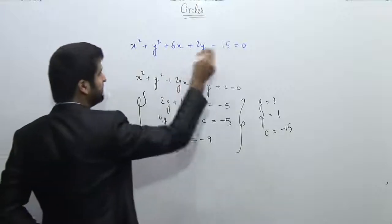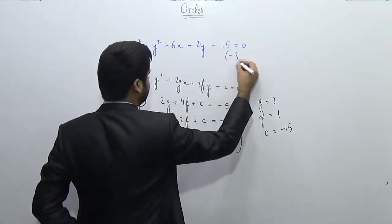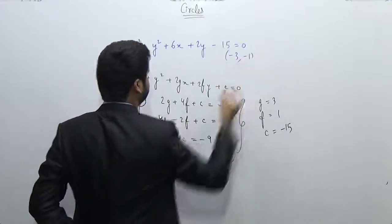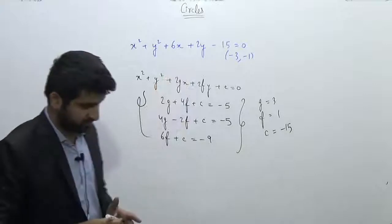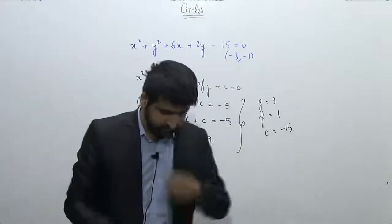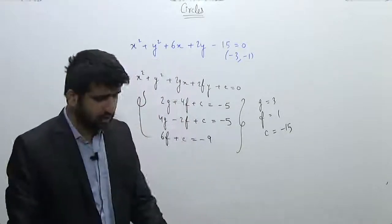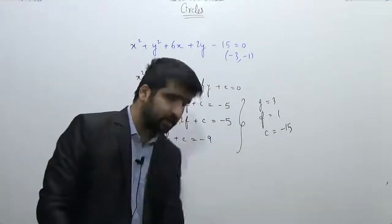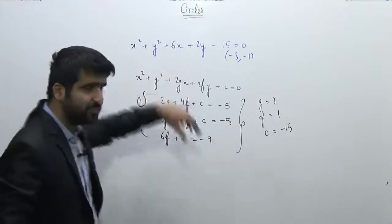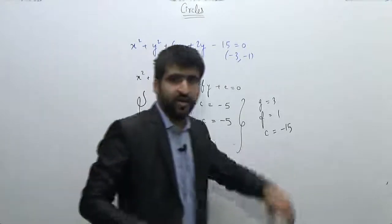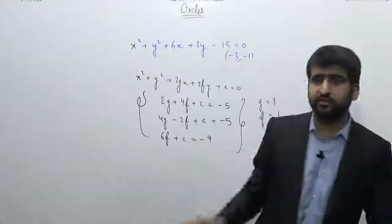From this, you can tell that the center of the circle is (-3, -1), and you can also find the radius. That's how we calculate the equation of a circle when three points through which it passes are given.